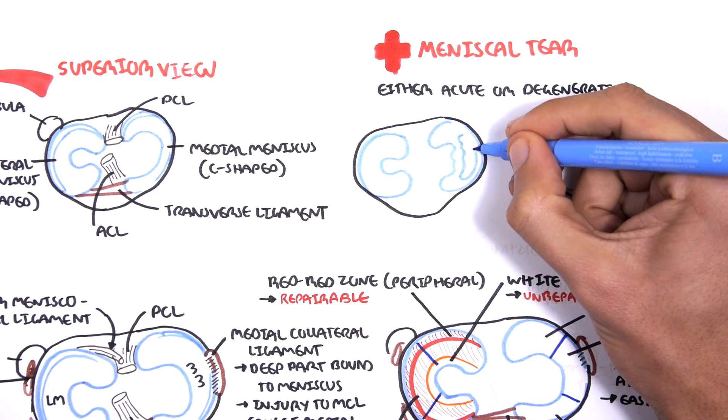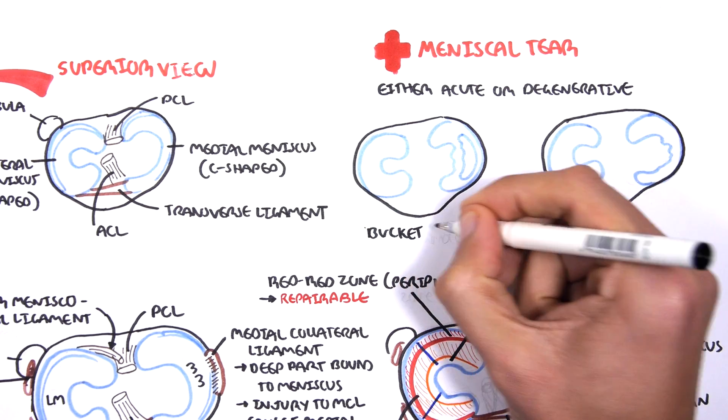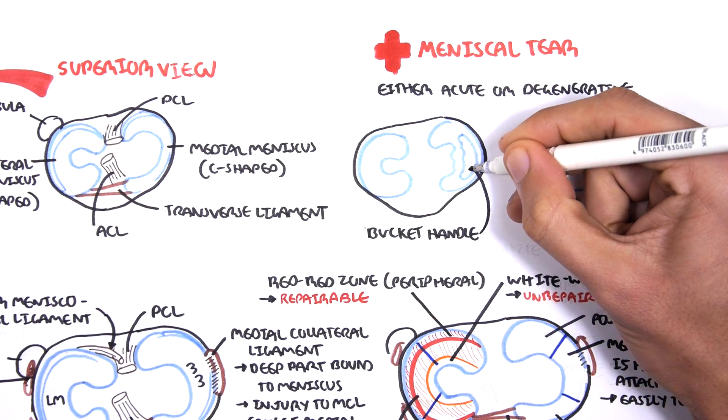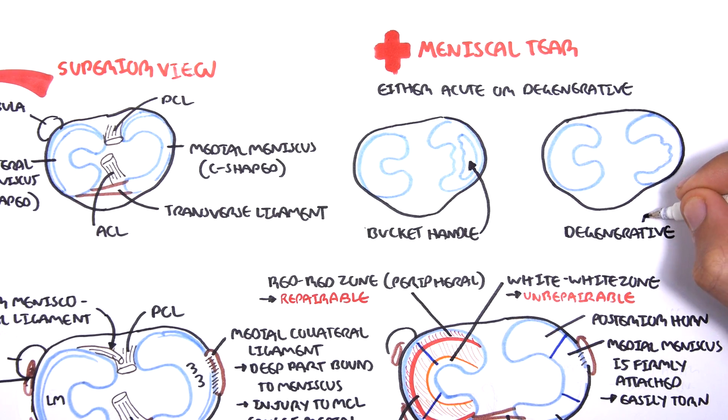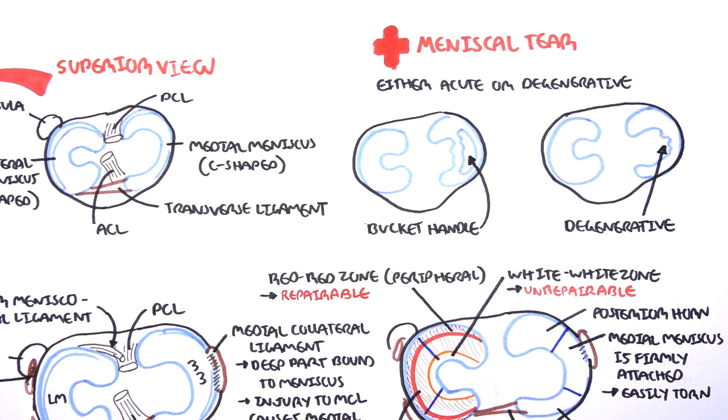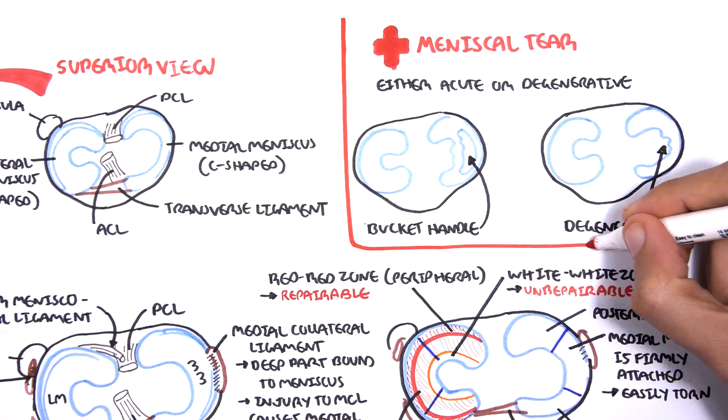Acute meniscal tears are usually bucket-handled tears from longitudinal tears. Degenerative meniscal tears are from old age and is due to wearing and tear with accompanying osteoarthritis. It is a complex type of tear which may involve other things.